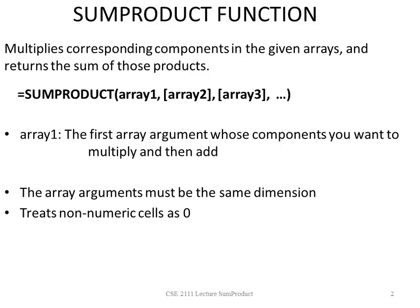The array one argument is the first array argument whose components you want to multiply and then add. The array arguments must be the same dimension, and this function will treat non-numeric cells as zero.